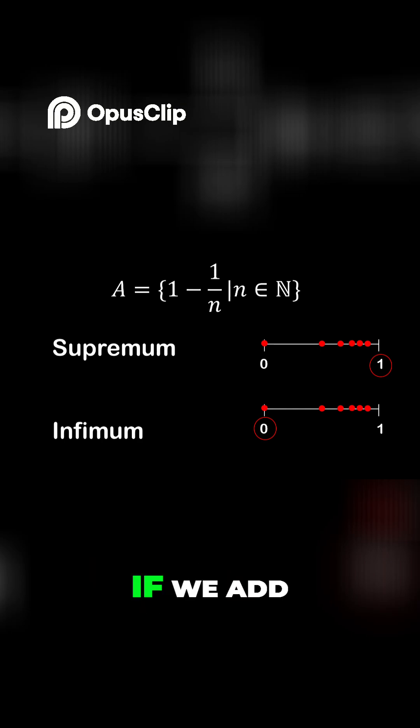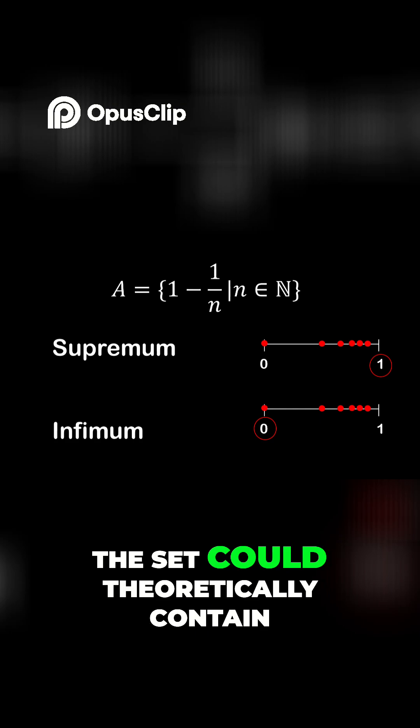So, if we had, for example, as N approaches infinity, we'd have 1 minus 0, which is 1. So, that's why the supremum is 1, because that is the maximum value that the set could theoretically contain.